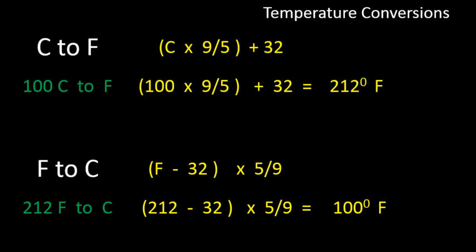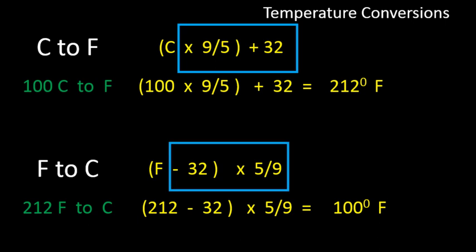So again, to convert Celsius to Fahrenheit, we end up with this formula where we multiply by 9 over 5, then add 32. From Fahrenheit to Celsius, we kind of do the opposite. We're going to start off by subtracting 32, and then multiplying by 5 over 9.